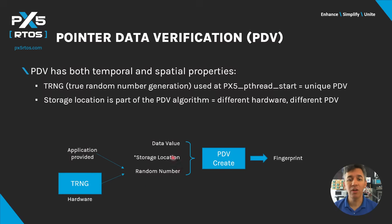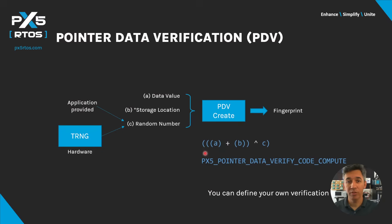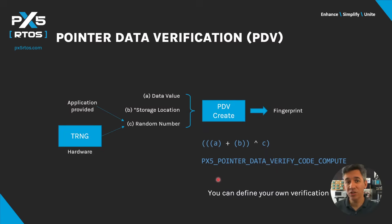Since all devices will have a different load map out of the box, the PDV algorithm is: (data value) OR (storage location) XOR (random number). This is defined in the px5.h header file, and you can define your own verification code if you prefer.